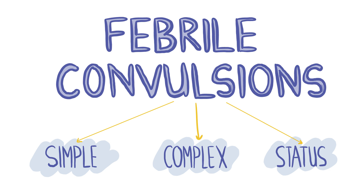Febrile convulsions are usually caused by infection including tonsillitis and otitis media. They usually last less than 15 minutes and are associated with rapid and full neurological recovery. Febrile convulsions are diagnosed clinically, however it may be useful to measure BMs and do a urine dip as general precautions. Seizures are managed with first aid measures. If it is the first ever seizure, or the seizure lasts more than 15 minutes, presents with focal signs, occurs in a child less than 18 months old, or occurs without any apparent cause for infection, arrange for the patient to be admitted to hospital. Antipyretics like paracetamol and ibuprofen should be given. If the seizure lasts longer than five minutes, provide buccal midazolam.